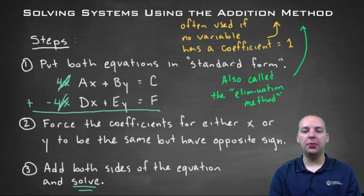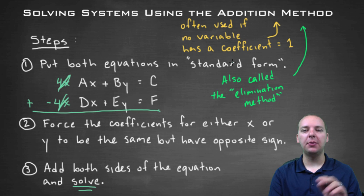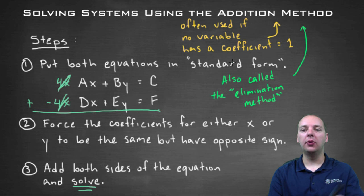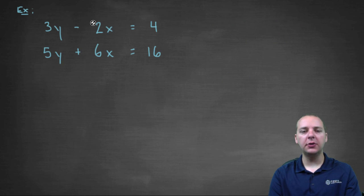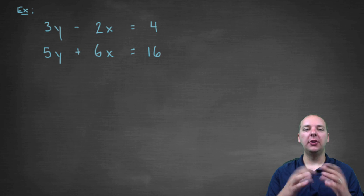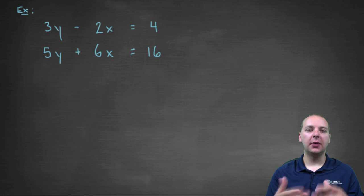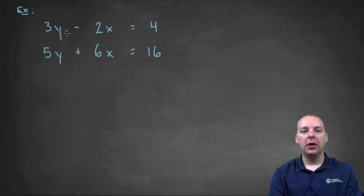Let's try a couple of examples — we're going to go through two full examples, and start a third. The first one is going to be an easier one just so we understand the process, and the second one will be a little bit more difficult. So here we go: we have three y minus two x equals four, and five y plus six x equals sixteen.